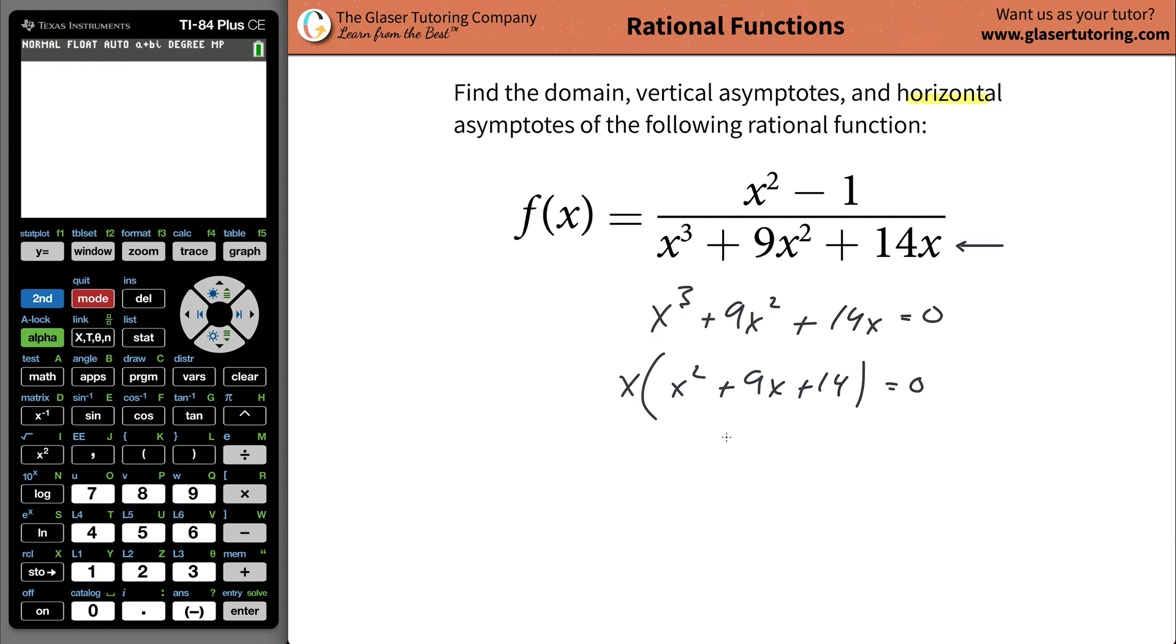What two numbers multiply to 14 but can add to positive nine? Well, I think it's just seven and two. So it's going to be x plus seven, and then x plus two, and that's equaling zero.